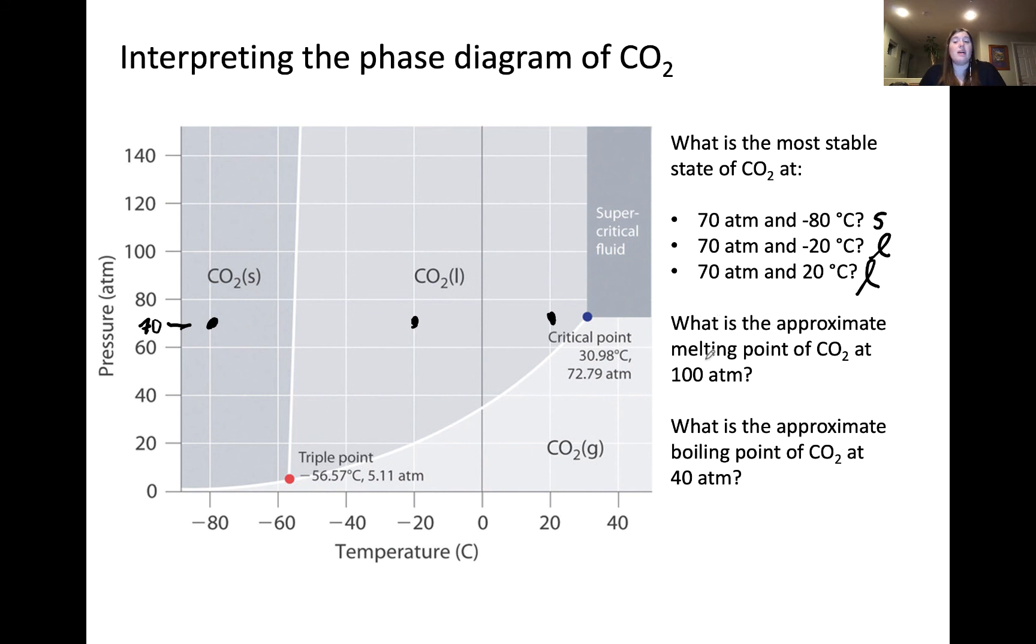Let's answer the next question, which is the approximate melting point of CO2 at 100 atmospheres. Here's our 100 atmosphere mark. When we're looking for the melting point, we're looking for the point at which the solid and liquid are at equilibrium. Remember that that is on this line, the boundary between the two phases. If we were to estimate the value of this, I would say it's between negative 60 and negative 40 degrees, but closer to negative 60. So, possibly something like approximately negative 55 Celsius would be a reasonable answer.